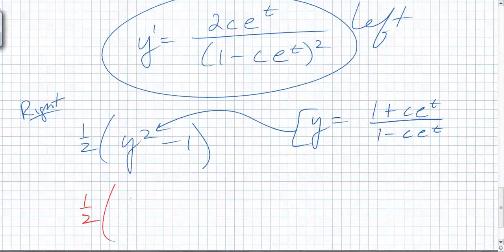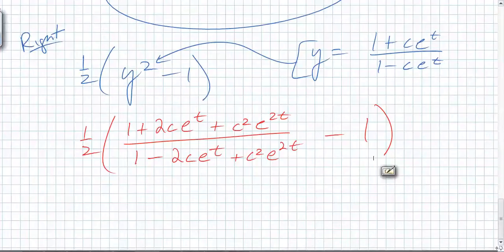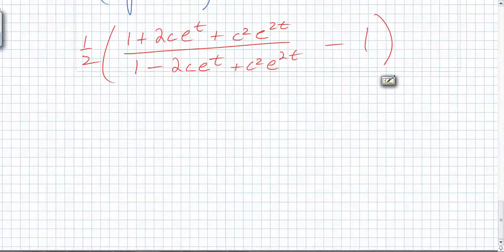One half times one, that's not that bad. Add two c e to the, no, e to the t plus c squared e to the over one minus what? c e to the plus c squared e to the minus what? One. Nice. We hope. So we will. That's it. Definitive. Gosh, I hope so.